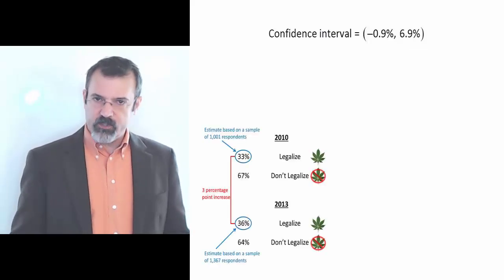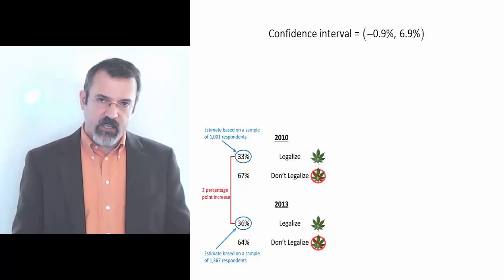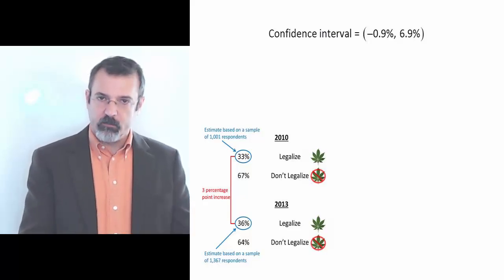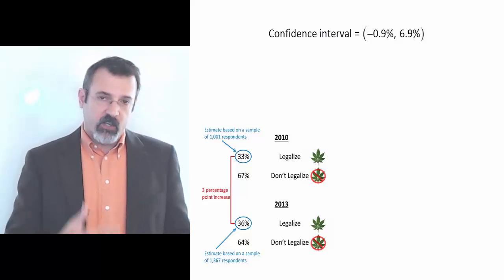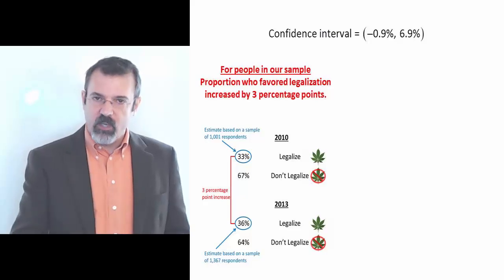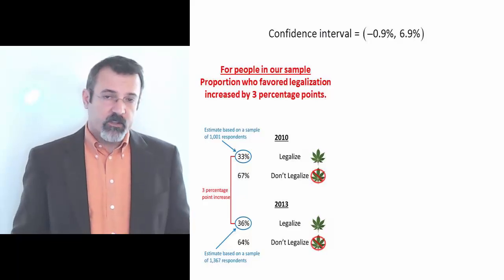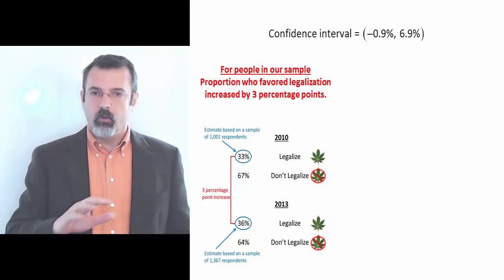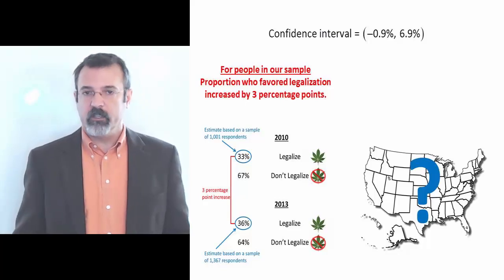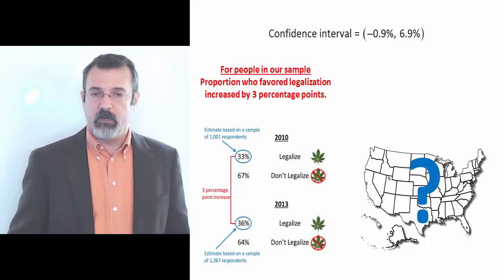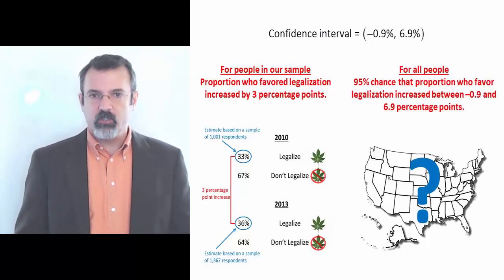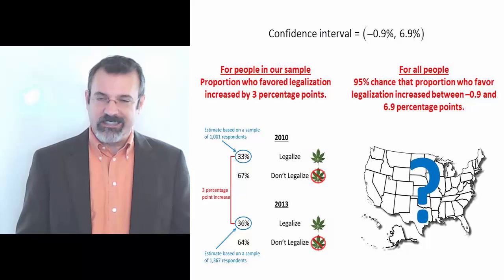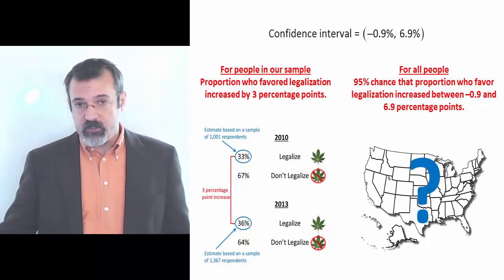So we can now make two statements. The first statement is, in 2010, we surveyed 1,001 people, and in 2013, we surveyed 1,367 people. And across those two samples, the difference in the number of people who favor legalization of marijuana is 3 percentage points. The other statement we can make is that although we don't know the percentage of all Americans who would favor legalization of marijuana, we do know that there's a 95% chance that the percentage of Americans who would favor legalization of marijuana changed from 2010 to 2013 somewhere between negative 0.9% and 6.9%.